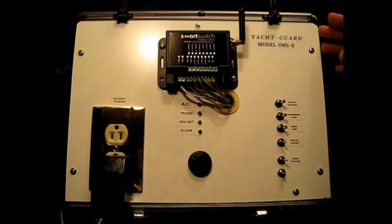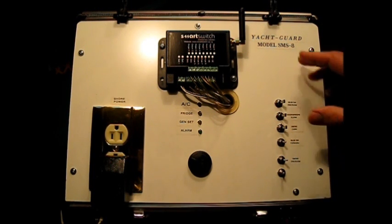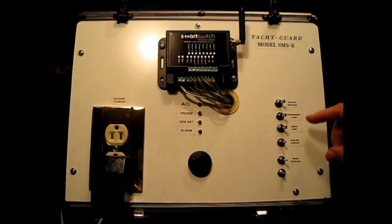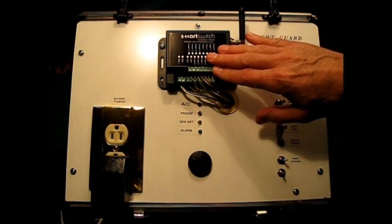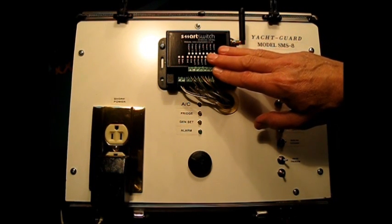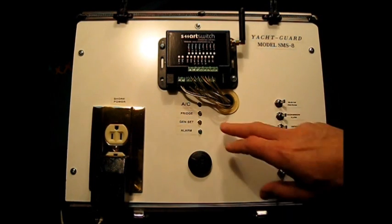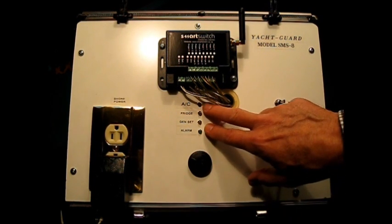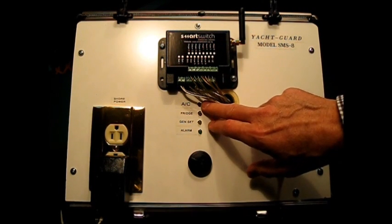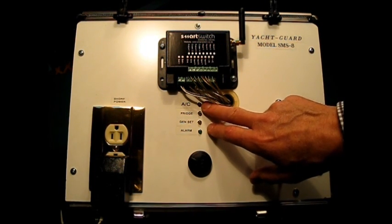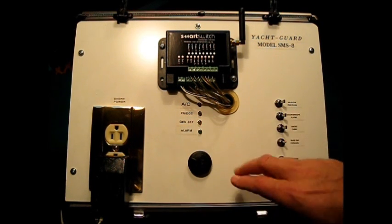In order to demonstrate the capabilities of the Yacht Guard system, we've set up this demonstration unit. It consists of switches which provide contact closures which are monitored by the SMS-8. It also includes lights which indicate the condition of outputs which come from the SMS-8. In this case, we've assigned them the air conditioner, the refrigerator, a genset, and the alarm.